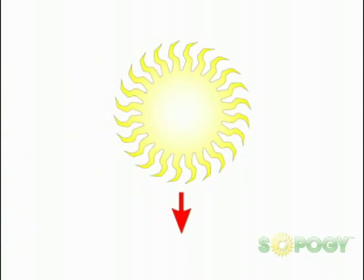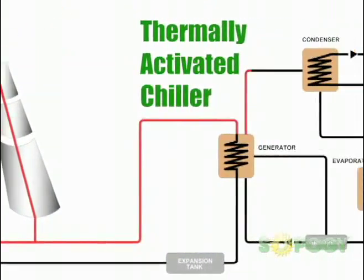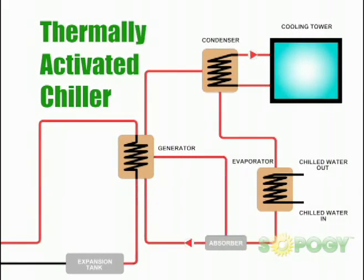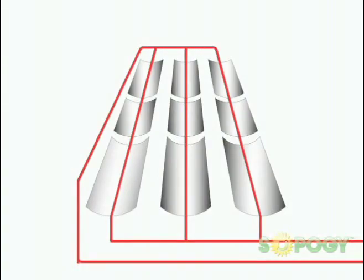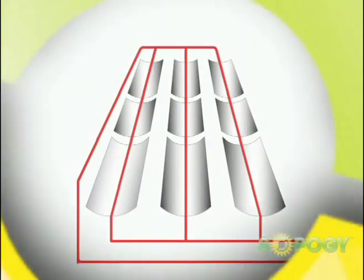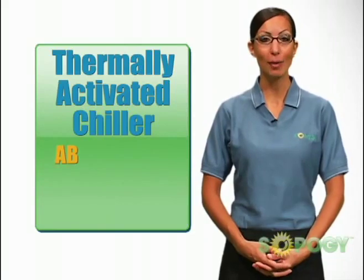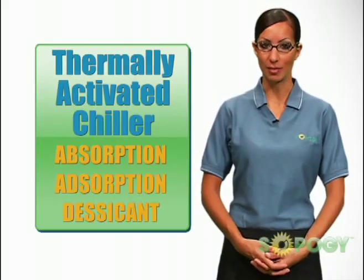In solar air conditioning, a set of SOPOG micro-CSP SOPONOVA troughs are connected to a thermally activated chiller running on heat. Different types of thermally activated chillers are absorption, adsorption or desiccant systems.